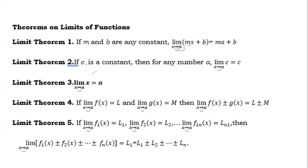Theorem two: if c is a constant, then for any number a, the limit of a constant as x approaches a is equal to that constant. You do not need to solve further — the limit of a constant is a constant. Theorem three: the limit of x as x approaches a is equal to a; you simply substitute a in place of x.